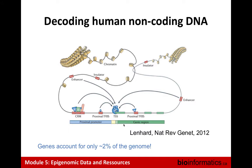Everybody's probably familiar with this, but coding sequences only account for roughly 2% of the genome. The rest — the majority of the human genome — is really about regulatory elements, things that actually control expression in different cells.